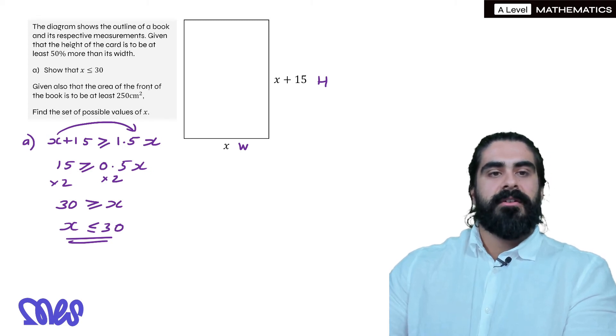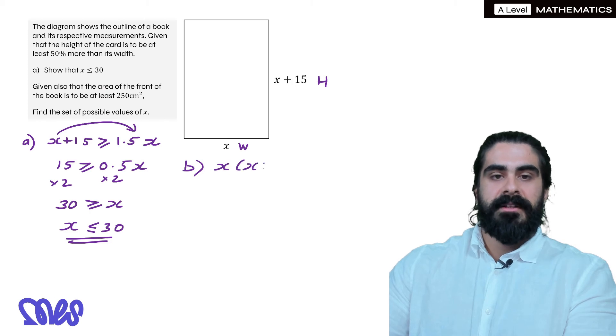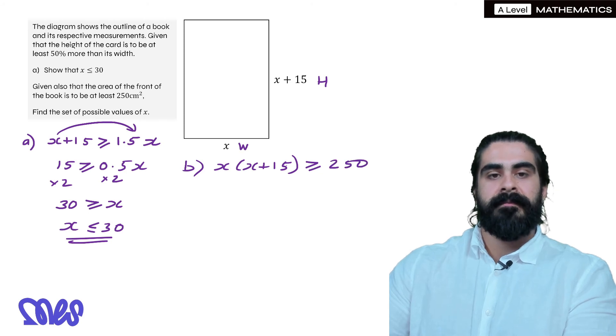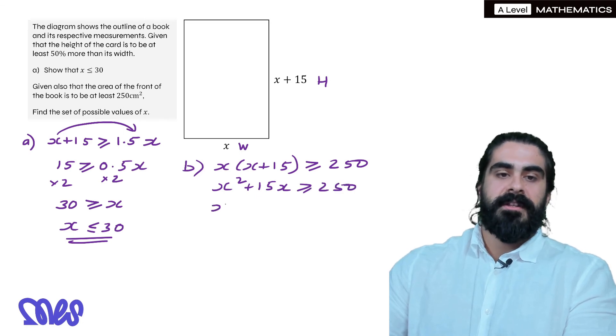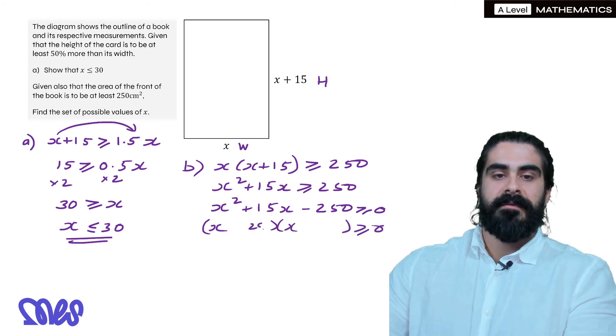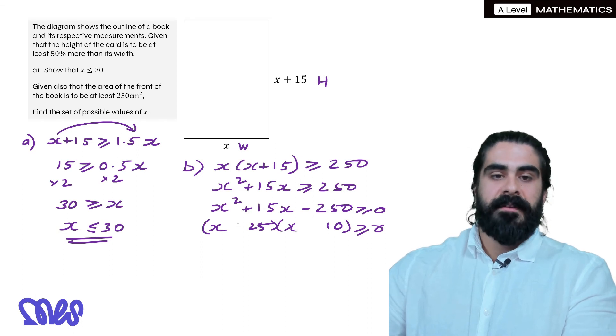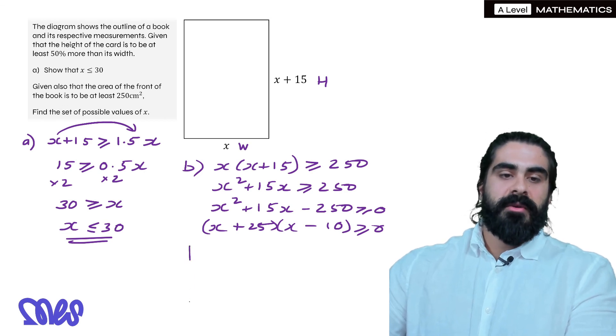Given also that the area of the front of the book is to be at least 250, find the set of values of x. So the area of this card would be x times x plus 15 and they're saying it has to be at least 250. Expand, and then we're going to move the 250 to the other side, and factorize. Now the easiest numbers we're going to try when we come to factorizing is 25 and 10, and that does work here. So 25 and 10, and then what makes 15 is if we have plus 25 minus 10.